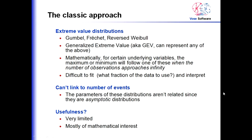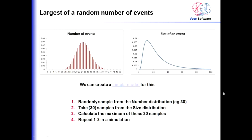The reality most of us live in is that we have a number of events following some probability distribution, and we have the size of an individual event, and we're asking which will be the largest. We can create a very simple model: randomly select a sample for the number of events — say 30 — then take 30 samples from the size distribution, calculate the maximum of those 30, and repeat. That gives one scenario of what the maximum might be.